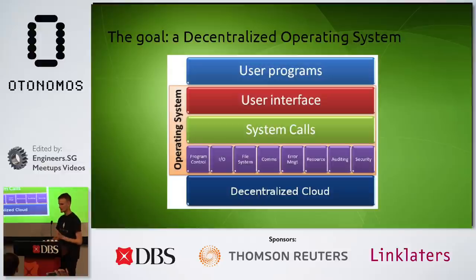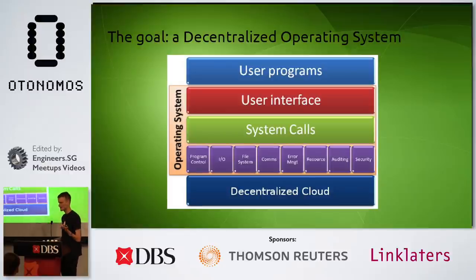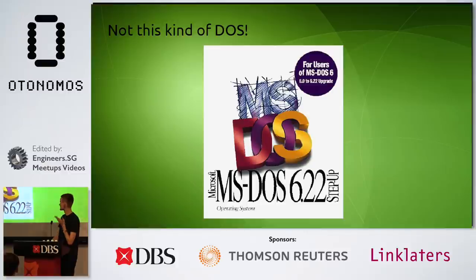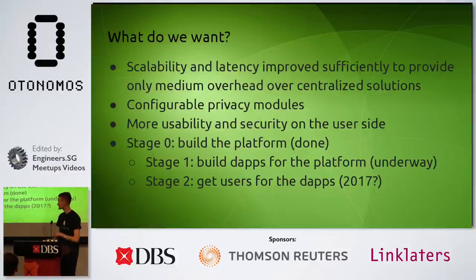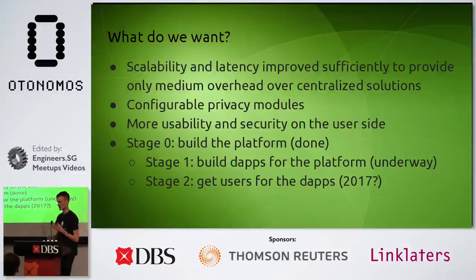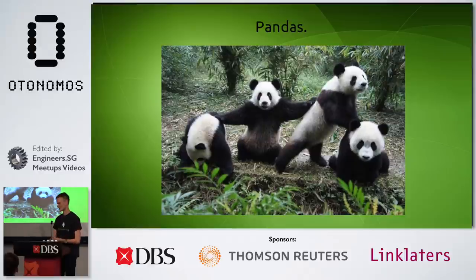Blockchains of the future: the goal is to think of it as a kind of decentralized operating system — a platform that lets you do theoretically everything applications do today with minimal losses to scalability, latency, and privacy, but with the gain of decentralization and cryptographic security. The platform should let people choose the security trade-offs they want and act as an almost invisible layer while providing security. Stage one is building the applications — Ethereum has about 220 of them. Stage two: applications need to get actual users. And of course, we need more pandas. Thank you.